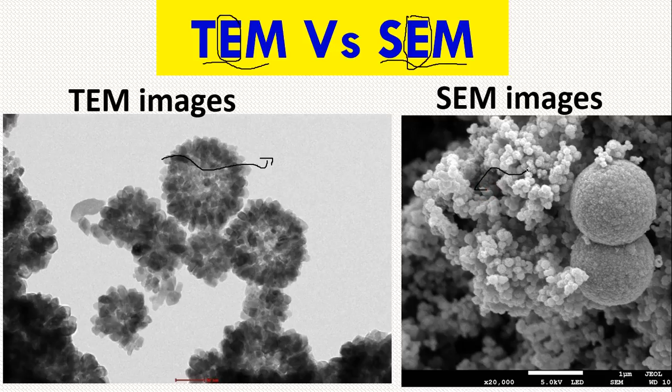In SEM, electrons scan the surface — it has nothing to do with the internal structure of a material. It only scans and gets information about the sample, just like when you close your eyes and put your hand on something: you can tell whether the object is rough, flat, or sharp. Similarly, electrons bombard the sample, scan the surface, and give us that information — whether the object is spherical, rod-shaped, hollow, or any other form.